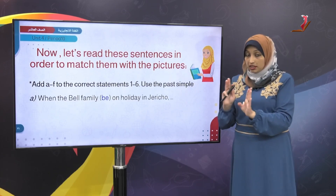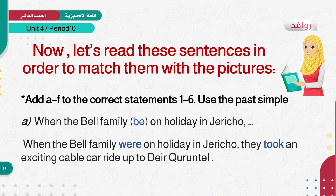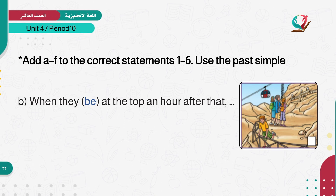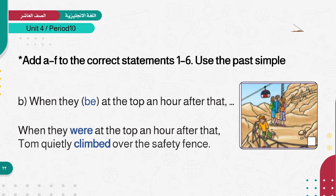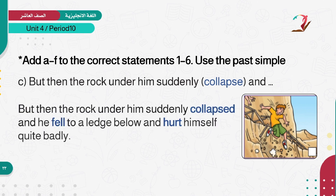The first sentence is ready: when the Bill family were on holiday in Jericho, they took an exciting cable car up to their current hill. Number two — A or B: when they were at the top, an hour after that, Tom quietly climbed over the safety fence. Then: but the rock under him suddenly collapsed — 'collapsed' in the past tense.